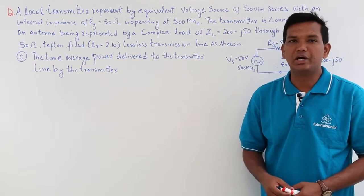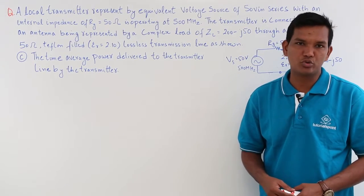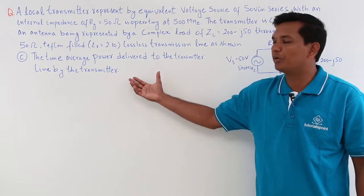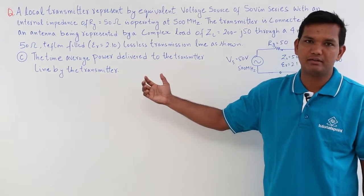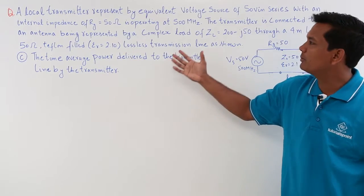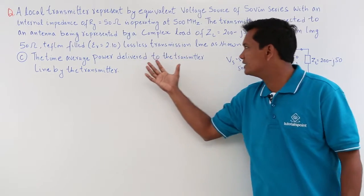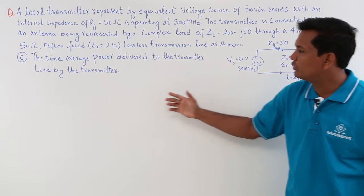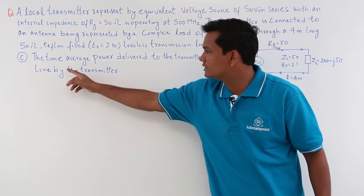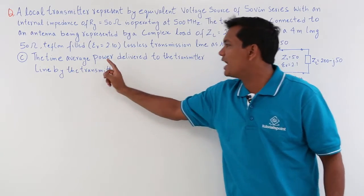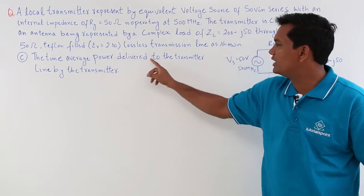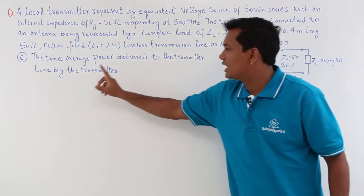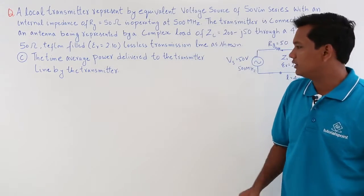In this class, we will continue with the same question and try to solve one more part of that. What we have to find is the time average power delivered to the transmission line by the transmitter.